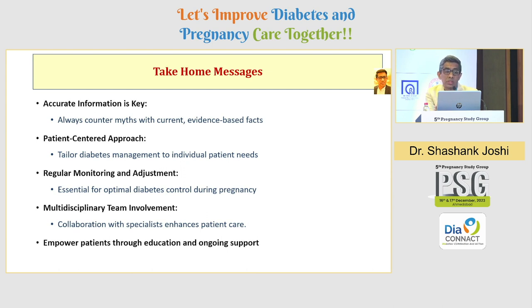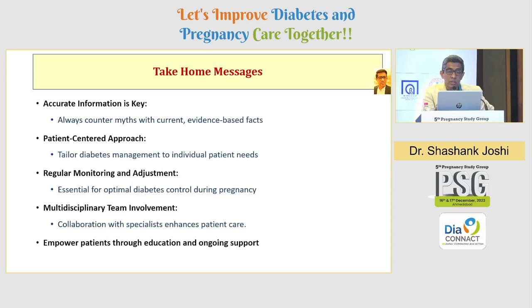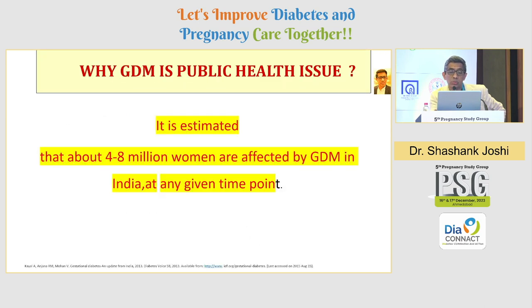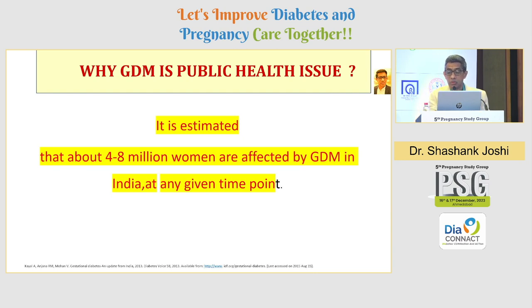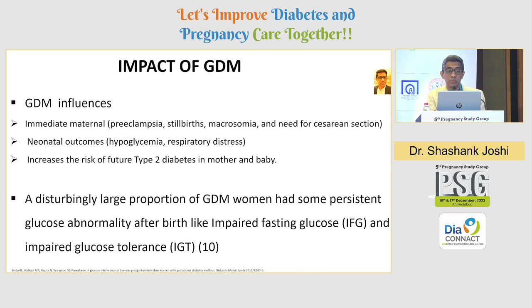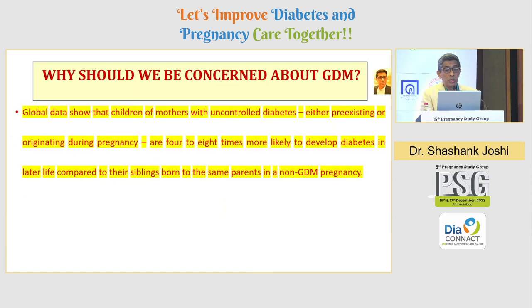The second key message is that we need to do good science and biology, but we also need to do myth-busting and give good take-home messages — accurate information is the key. I urge Rutul to convert the proceeds of this meeting into public health messages. Take help from people like Chandrakant, Bansi, Rajiv, and ensure that accurate information counters myths with evidence-based facts. Tailor diabetes management to individual patient needs — a patient-centric approach with regular monitoring, multi-disciplinary involvement, and empowering people with education and ongoing support. GDM is a public health issue. The GDM estimate in India is around 4 to 10 million at any given point — we don't know the true figures. GDM clearly impacts both maternal and neonatal outcomes.